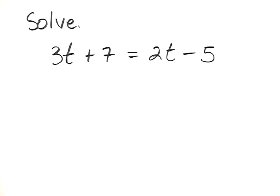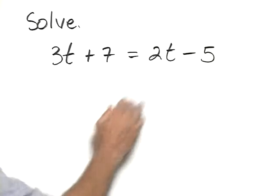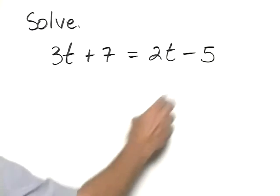Solve 3t plus 7 equals 2t minus 5. For this particular example, since we have t's on both sides and we have constants on both sides,